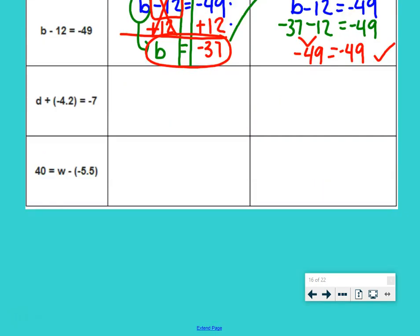Last two examples are very similar, except for now we just have decimals, which work the same. They're just decimal numbers. They're just fractions of numbers. So, here we have d plus negative 4.2 equals negative 7. Now, this can get a little tricky for some students because we have an addition sign and a negative sign. But really, adding a negative is subtracting. So, if you need to rewrite it as subtraction, go ahead. Because that means d minus 4.2 equals negative 7.